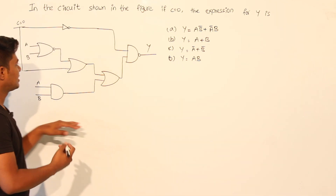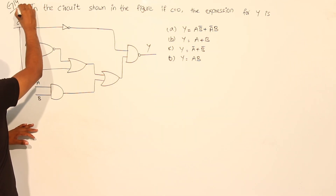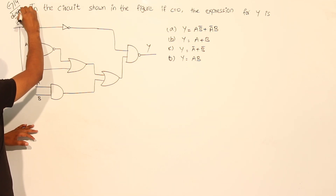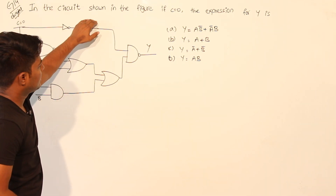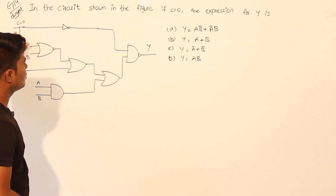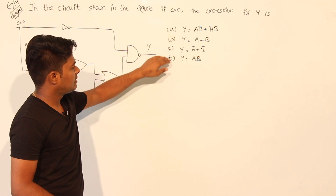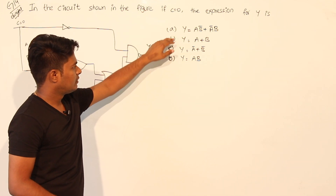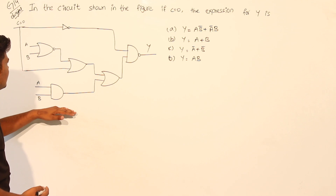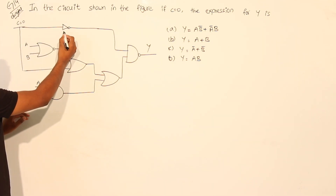This question is from Gate 2014 in the subject of digital circuits. In the circuit shown in the figure, if C is equal to 0, they are asking for the expression for Y. Options A, B, C, and D are given — which one of the following is the expression for Y? Let us observe this diagram.